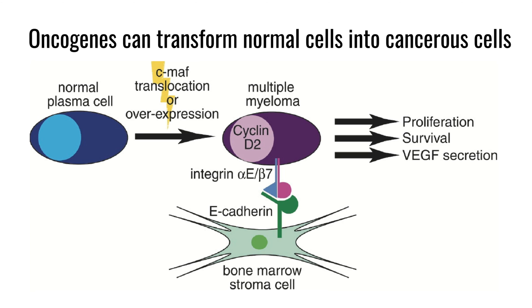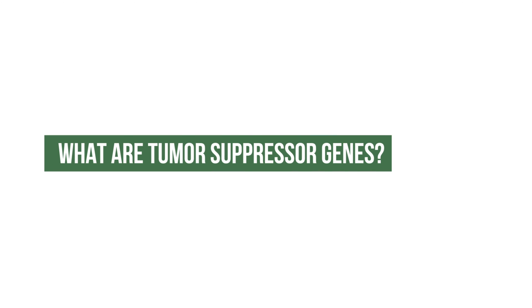An oncogene is a gene that, if you put it into an assay in a dish, can transform normal cells into cancerous cells. We all have these latent genes in our genome — it's just that if you turn them on at the wrong time, in the wrong way, in the wrong cell, they can cause cancer. There doesn't actually need to be any single point mutation or anything different about the gene in that person.